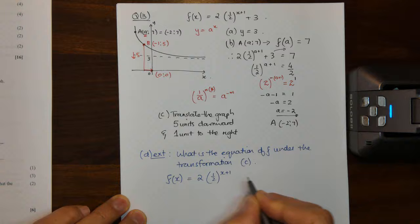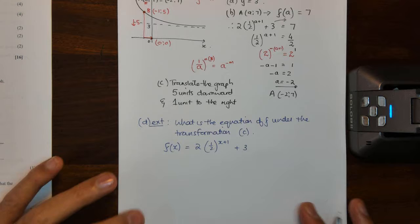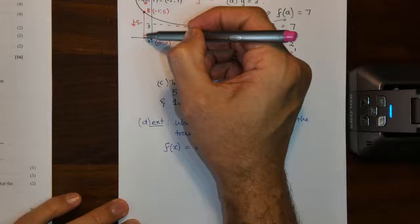So what do we have? We have F of X is twice a half to the power of X plus 1 plus 3. If we translate that graph five units downward, it would mean that our shift is in the Y.